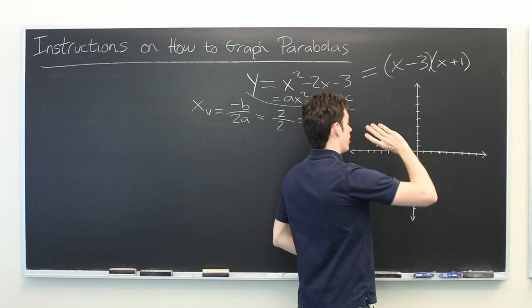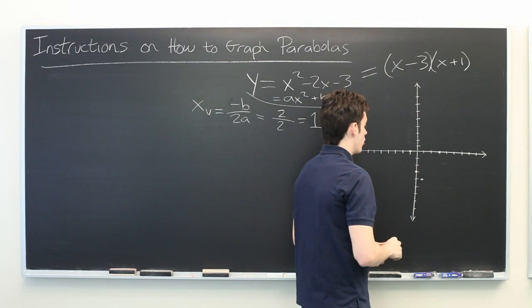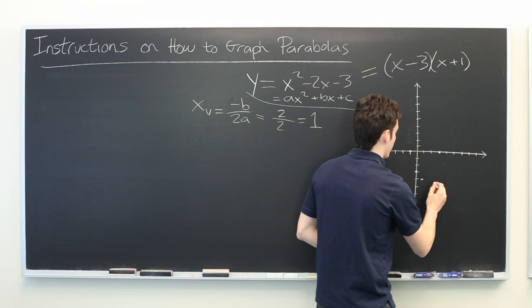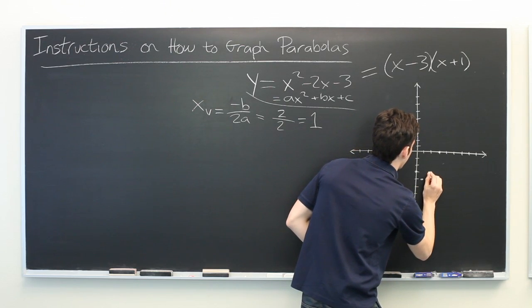But since a parabola is symmetric, there should also be a point that is one unit above and one unit to the right of the vertex, which will be 2, negative 3.